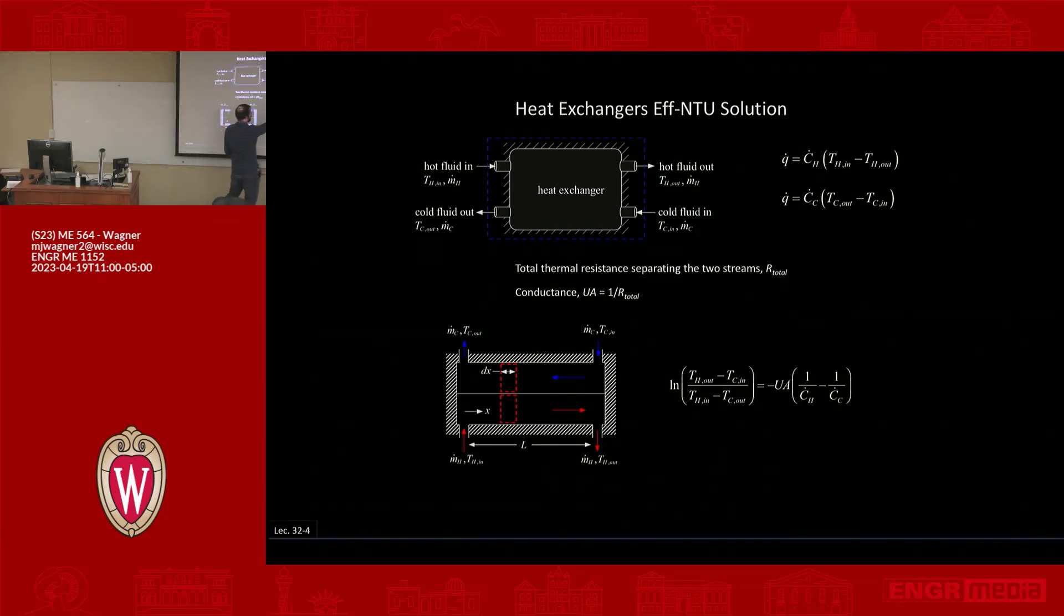Q dot is also equal to C dot C TCL minus TCN, so you have the two different energy balances. You have the third equation here that helps you relate the three unknowns that you have. So this is what we did, remembering that conductance UA is one over R total.